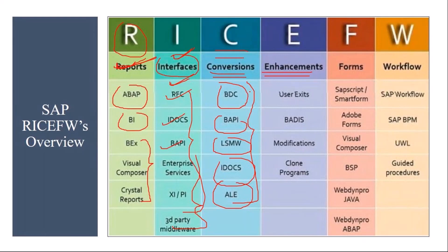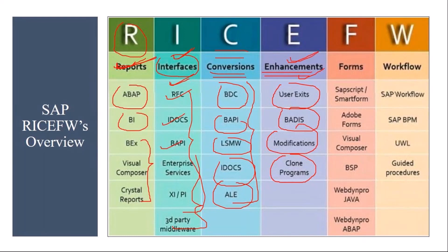E means Enhancements. Sometimes certain requirements cannot be achieved through standard SAP, so in that case you go for enhancements. The tools used include User Exits, BADIs, modifications, and some cloned programs. When we go to the enhancement session, I will give a real-time example in the system and show how to write a functional specification document for enhancements.